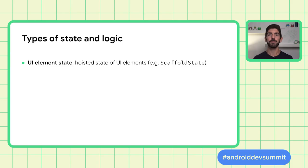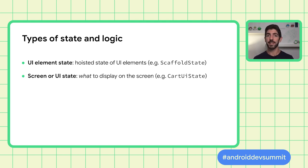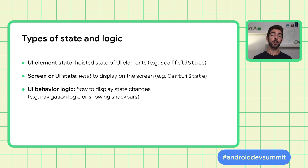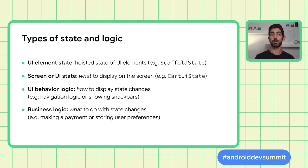Before we start, it's important to define some terms. UI element state is the hoisted state of UI elements — for example, scaffold state. The screen or UI state is what needs to be displayed on the screen, such as cart UI state containing cart items, messages to show the user, or loading flags — usually connected with other layers of the hierarchy. UI behavior logic is related to how to display state changes on the screen, such as navigation logic or showing snack bars, and should always live in the composition. Business logic is what to do with state changes — making a payment or storing preferences — and is usually placed in the business or data layers, never in the UI layer.